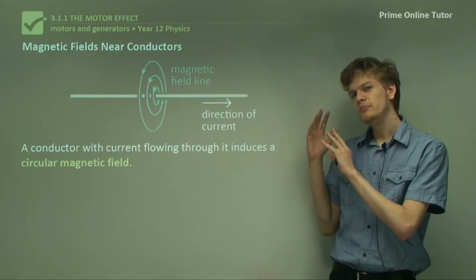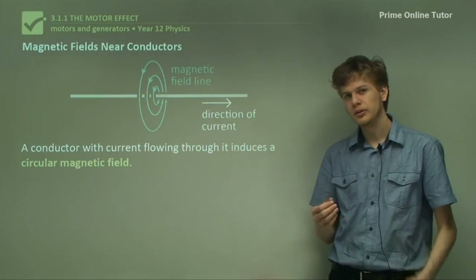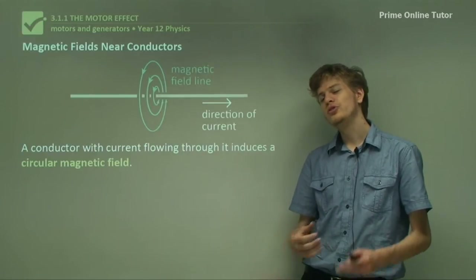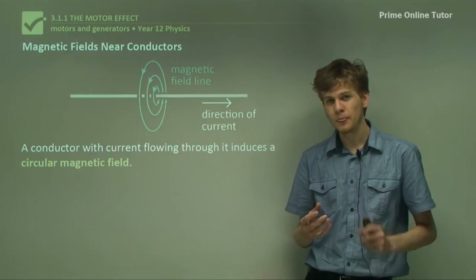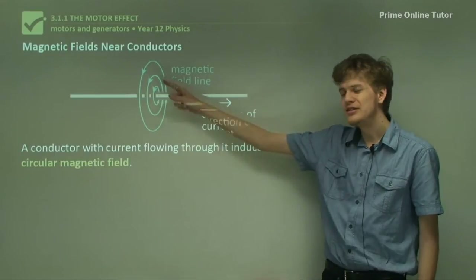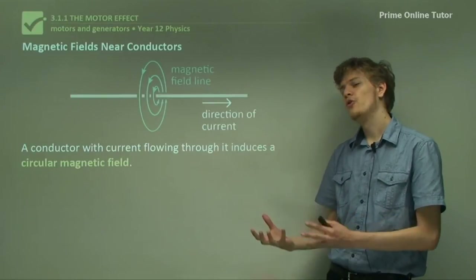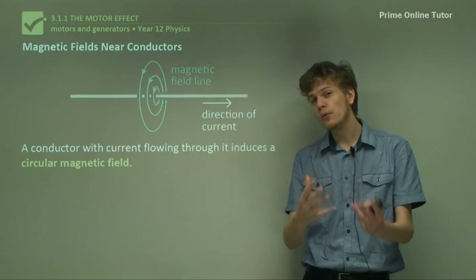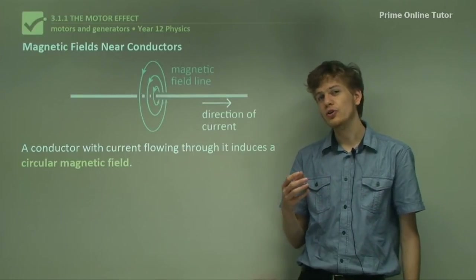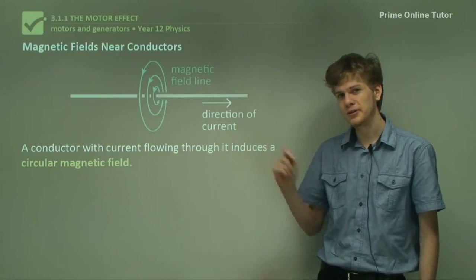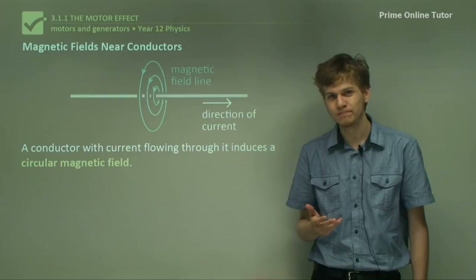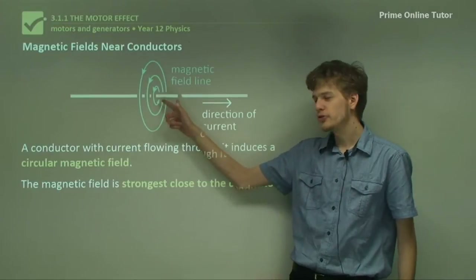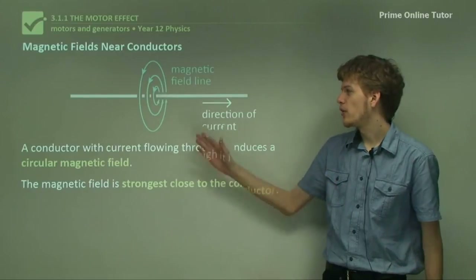If you ever run a very big current through a wire or any conductor, you'll notice something interesting if you hold a compass near it. The conductor will produce a circular magnetic field. If you put a compass near it, it will point in the direction indicated by the arrows. So we can draw circular magnetic field lines around a current-carrying conductor. The conductor doesn't have a north pole or a south pole, so the field lines go in a circle around the conductor. The magnetic field is strongest close to the conductor, where the field lines are closer together.